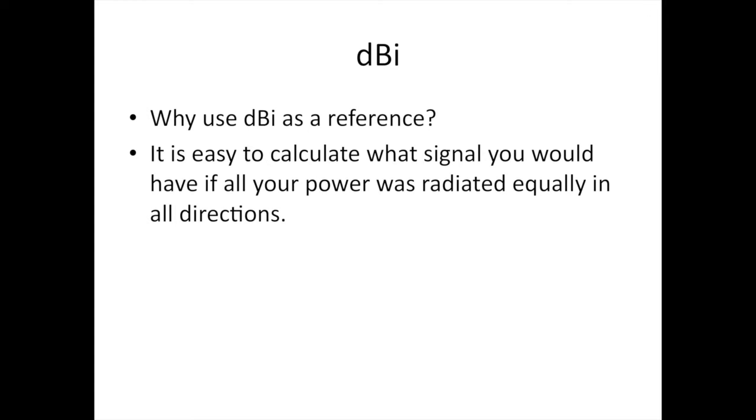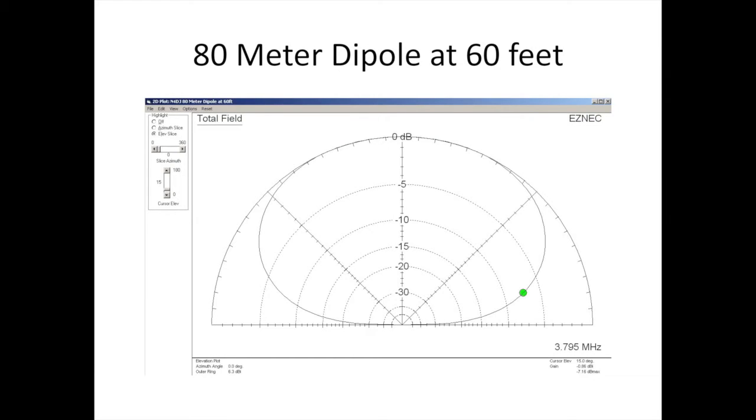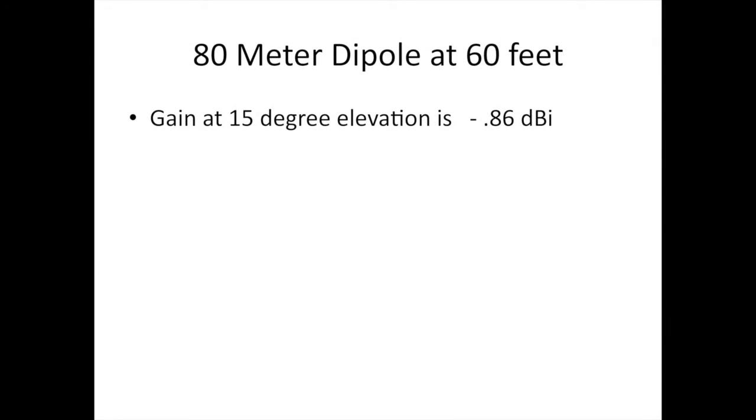Now let's look at some plots of some antennas. This is an 80 meter dipole at 60 feet. You can see where all the power is going, pretty much straight up. And here's an 80 meter dipole at 60 feet. Gain is 0.86 dBi. Not a whole lot of gain at the 15 degree elevation angle.